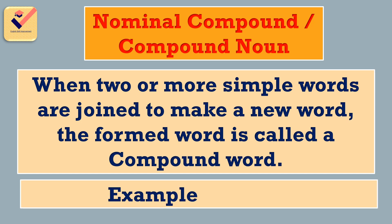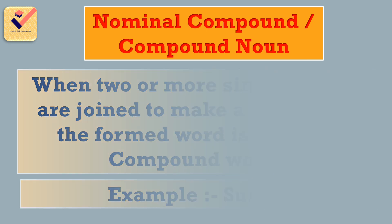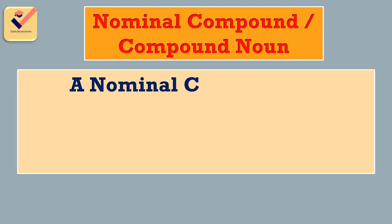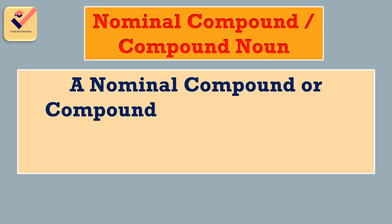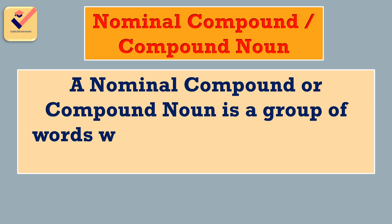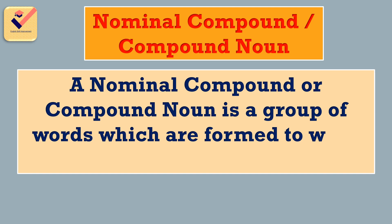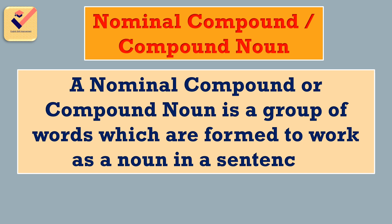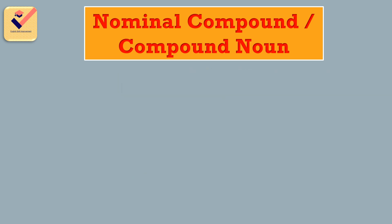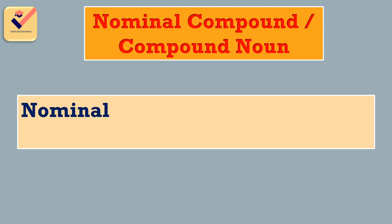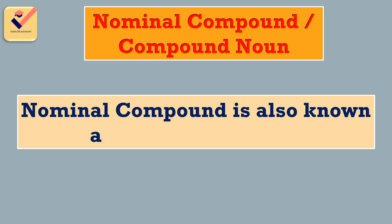Example: SUNSET. A nominal compound or compound noun is a group of words which are formed to work as a noun in a sentence. Nominal compound is also known as compound noun.